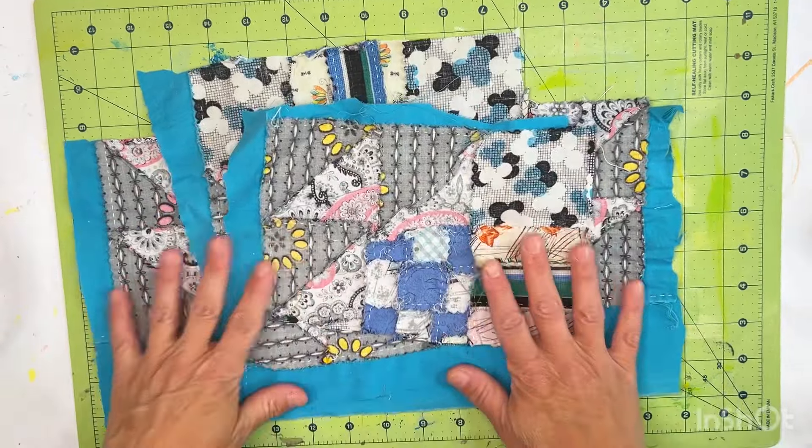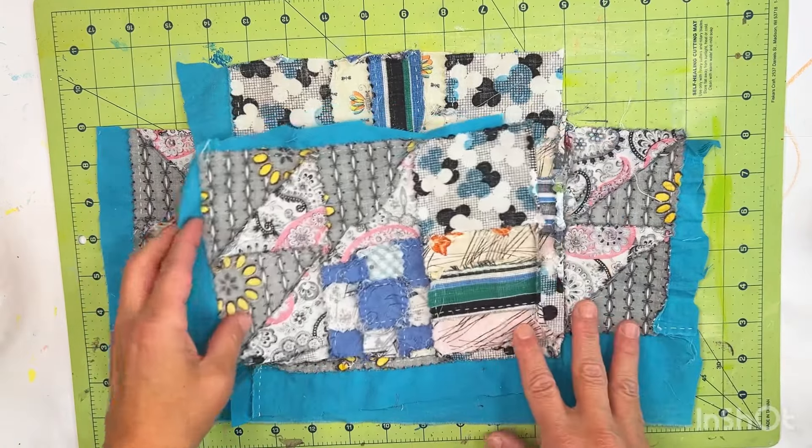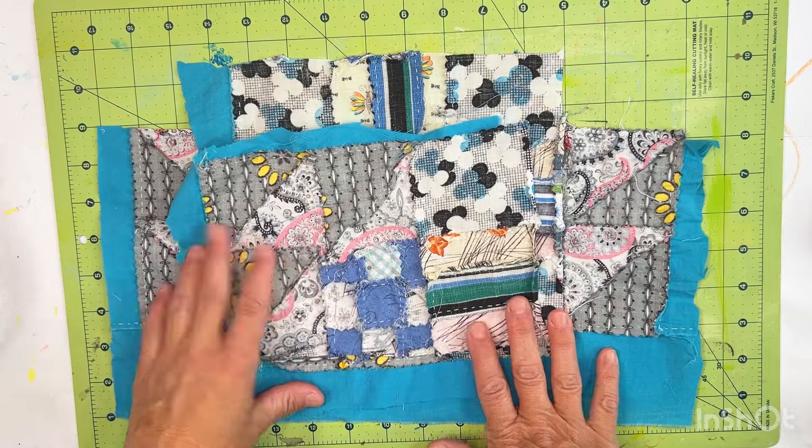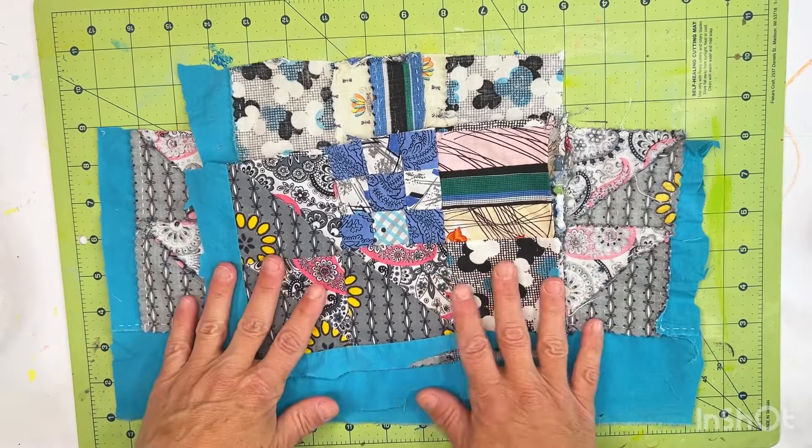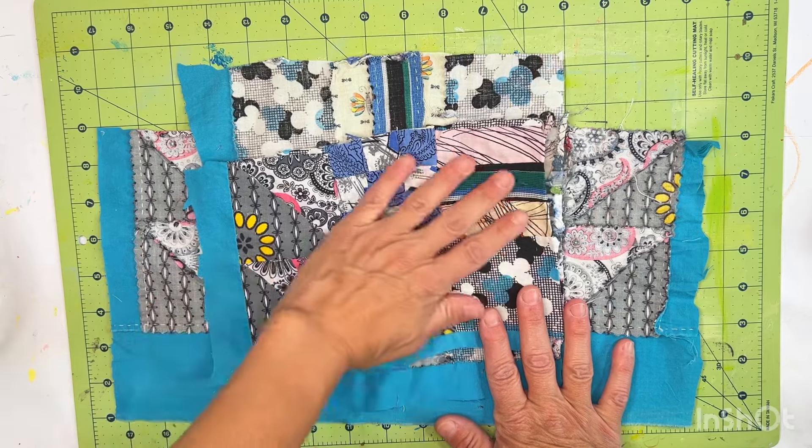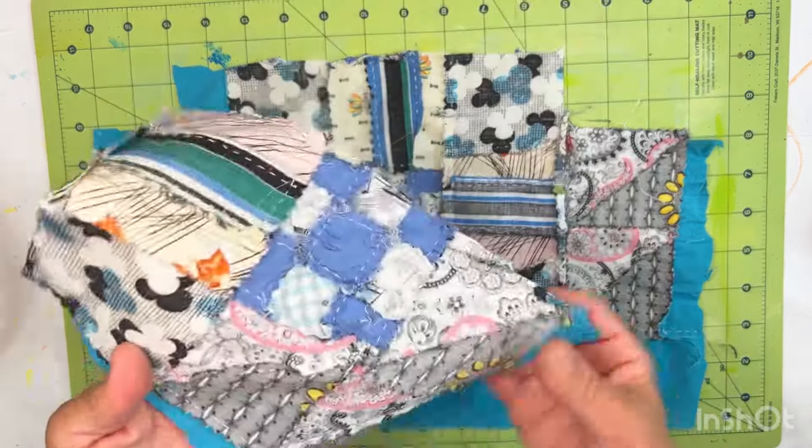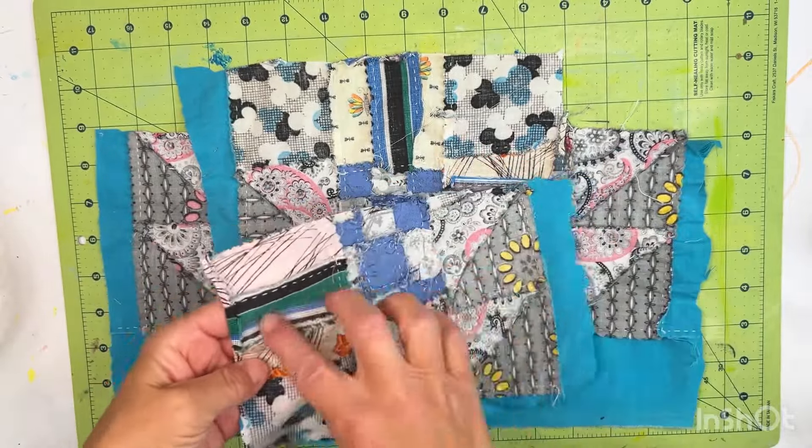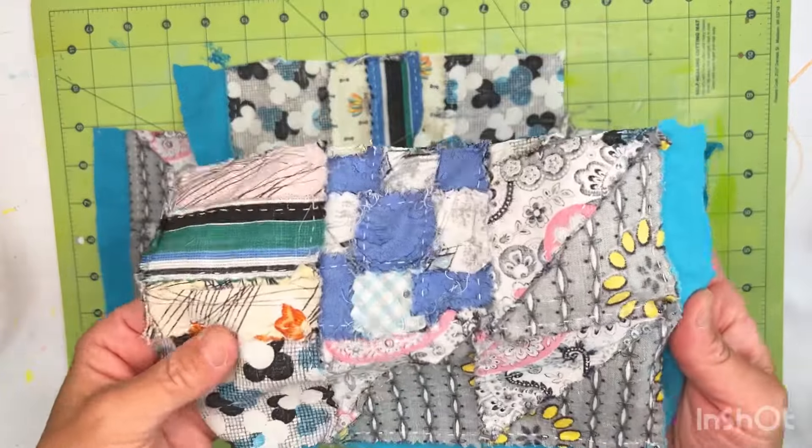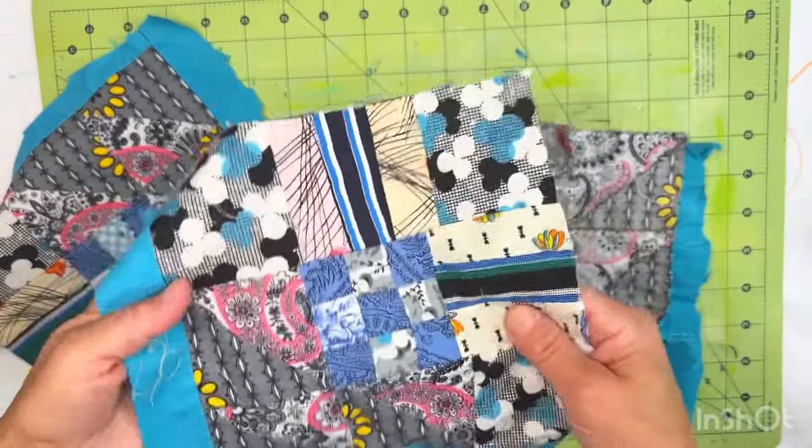So if you are a person that goes to thrift stores or estate sales you'll almost always run across abandoned projects. One of my favorite abandoned projects are quilt tops. I love how someone took the time especially with this one to hand stitch all of these blocks together. These little fabric scraps but yet they couldn't quite complete the project.